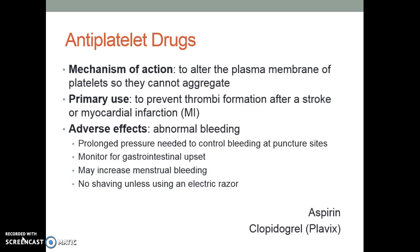Antiplatelet drugs alter the plasma membrane of platelets so that they cannot aggregate — basically it keeps them from sticking to one another. The primary use is to prevent thrombus formation after a stroke or an MI. Some antiplatelet drugs are used after stent placement. One of the biggest side effects is abnormal bleeding. You have to watch for GI bleeding, increased menstrual bleeding, and all the teaching that goes along with bleeding precautions: using an electric razor, watching for changes in mental status, holding pressure for longer periods of time. Two example medications are aspirin and clopidogrel, also known as Plavix.